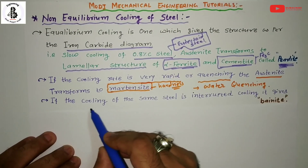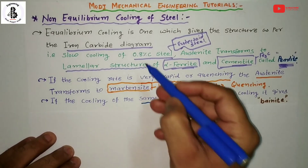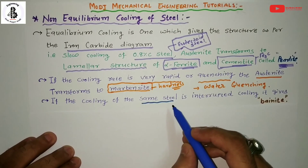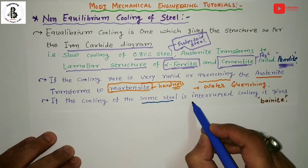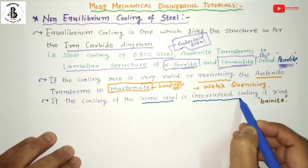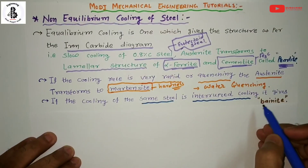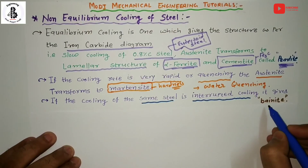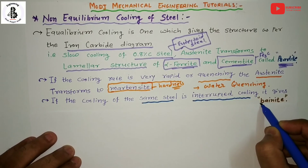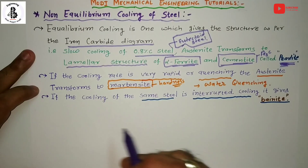If the cooling of the same 0.8% carbon steel is interrupted — with some different cooling rates — there will be formation of bainitic structures.